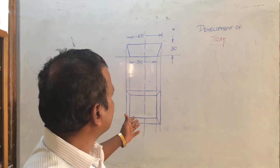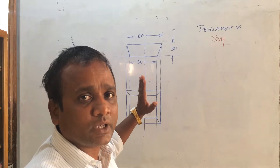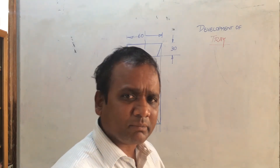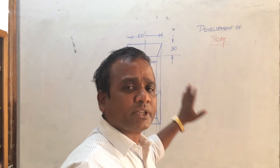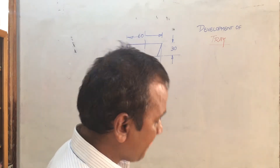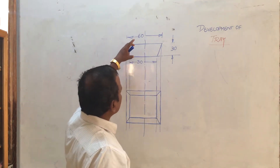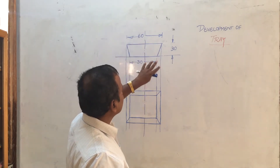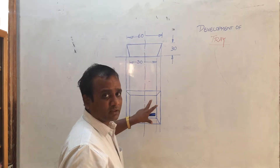Development of a tray for the dimensions shown here. Let's follow a simple procedure to develop a tray that can be used in your sheet metal workshop. This is a top view and a front view — this is what a front view looks like for a tray, and this is a top view of how a tray looks like.